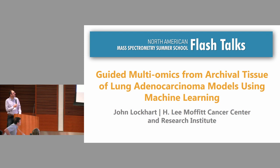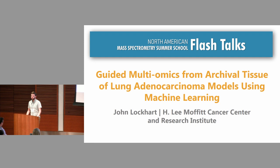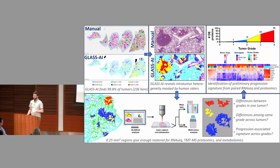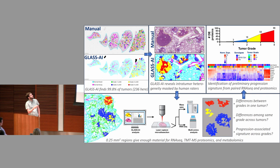Next we have John Lockhart from the Moffitt Cancer Center. I'm a postdoc at Moffitt Cancer Center, and today I'm going to talk about some of the machine learning tools we've been developing and how we're integrating them with spatial multi-omics. Our lab is a very traditional molecular biology lab — we study the p53 family and how it affects tumor progression in multiple different types of cancers, with my work primarily focused on lung cancer.